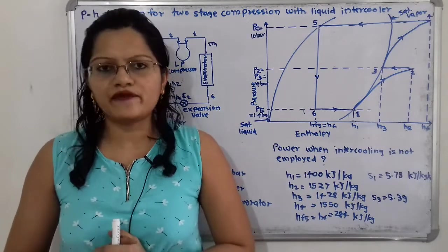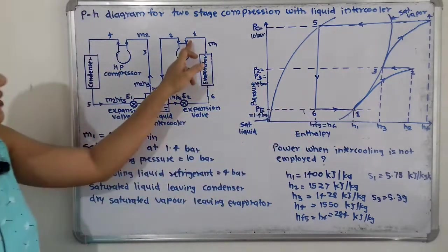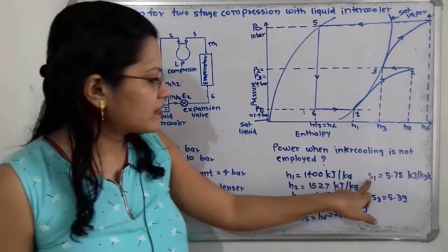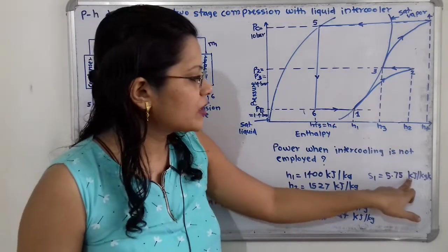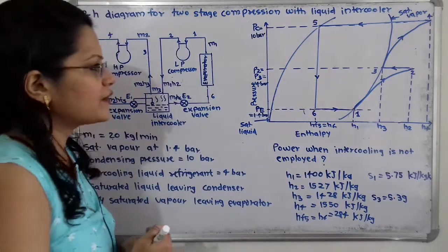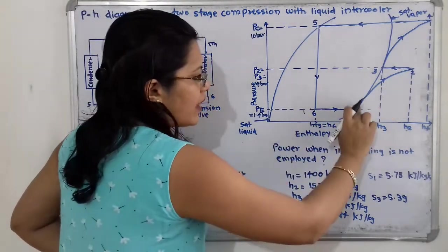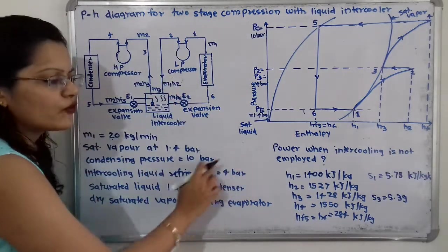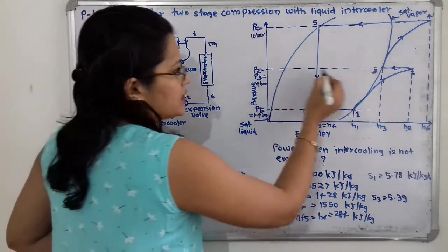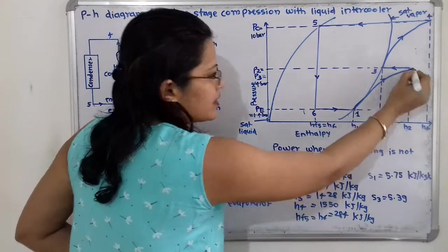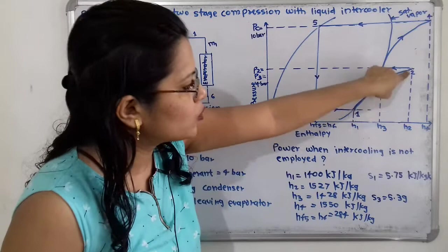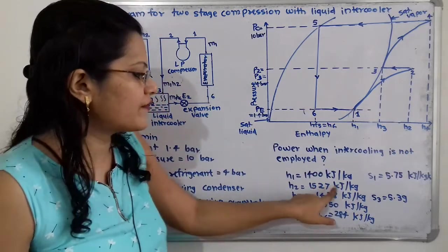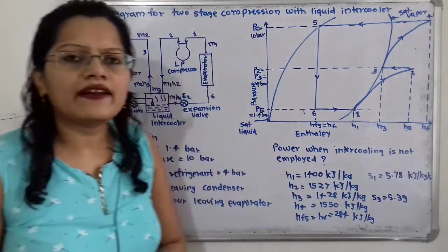To find the enthalpies at points 2, 3, and 4: at point 1, the compression process is isentropic (constant entropy). The entropy at point 1 is s1 = 5.75 kJ/kg·K. We follow this constant entropy line. The low pressure compression goes up to 4 bar, so at the intersection of the constant entropy line and the 4 bar pressure line, we get point 2. Extending to the enthalpy axis gives h2 = 1527 kJ/kg.